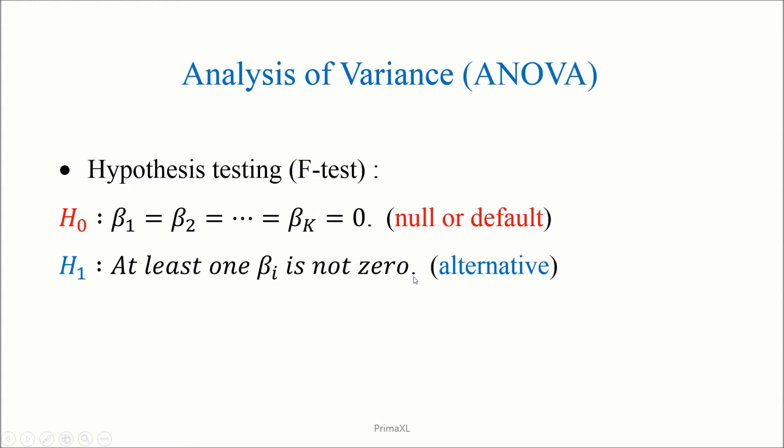In order to decide whether we take H0 or H1, we calculate the F-statistic and the p-value. The formula for the F-statistic is like this.